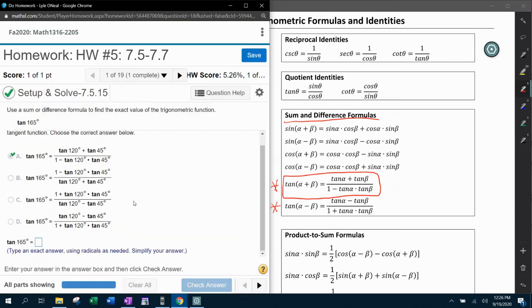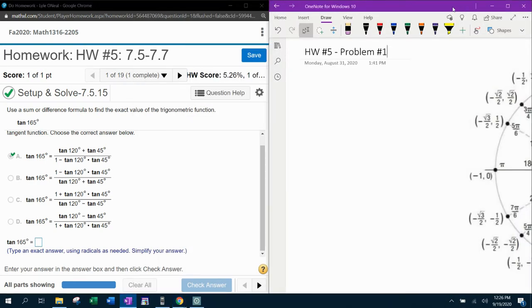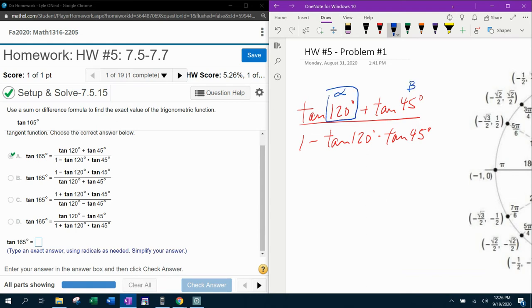Now that we've figured out which answer is correct, now they actually want me to work that out. So then if I go to my scratch work here, we're going to say tangent of 120 plus tangent of 45 all over... And as you can see, I'm just copying down the answer choice that we chose. And what we're going to do is we're going to use the unit circle then to evaluate this. So here, this is my alpha. And this is my beta. And so I'm going to need to figure out the tangent of 120 and the tangent of 45.